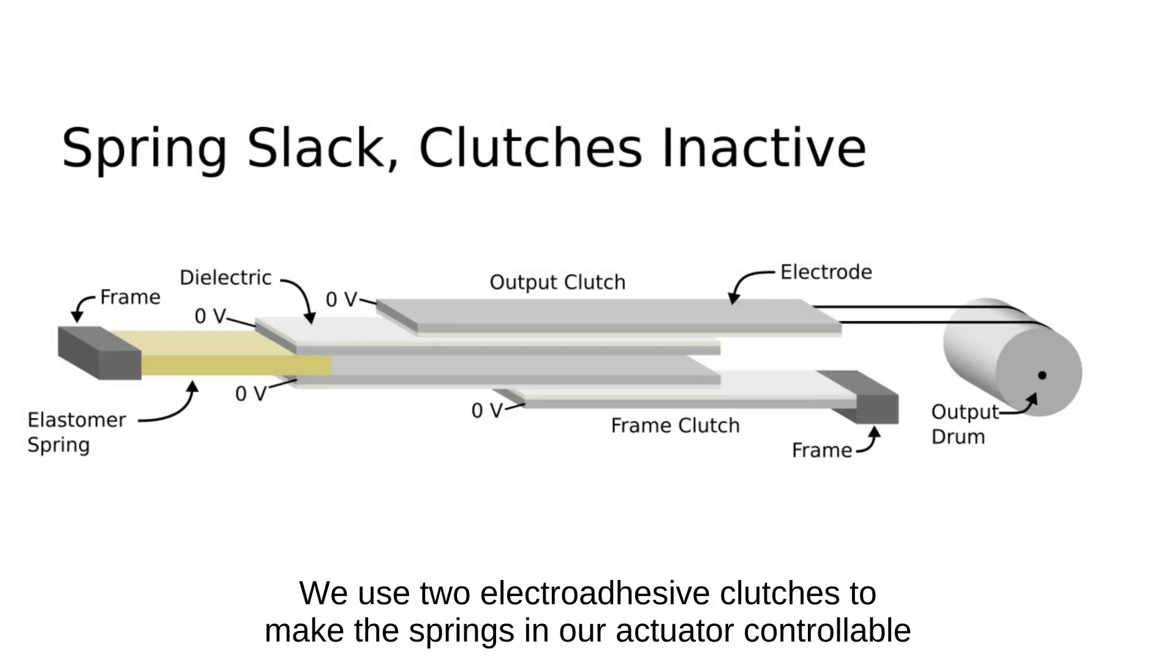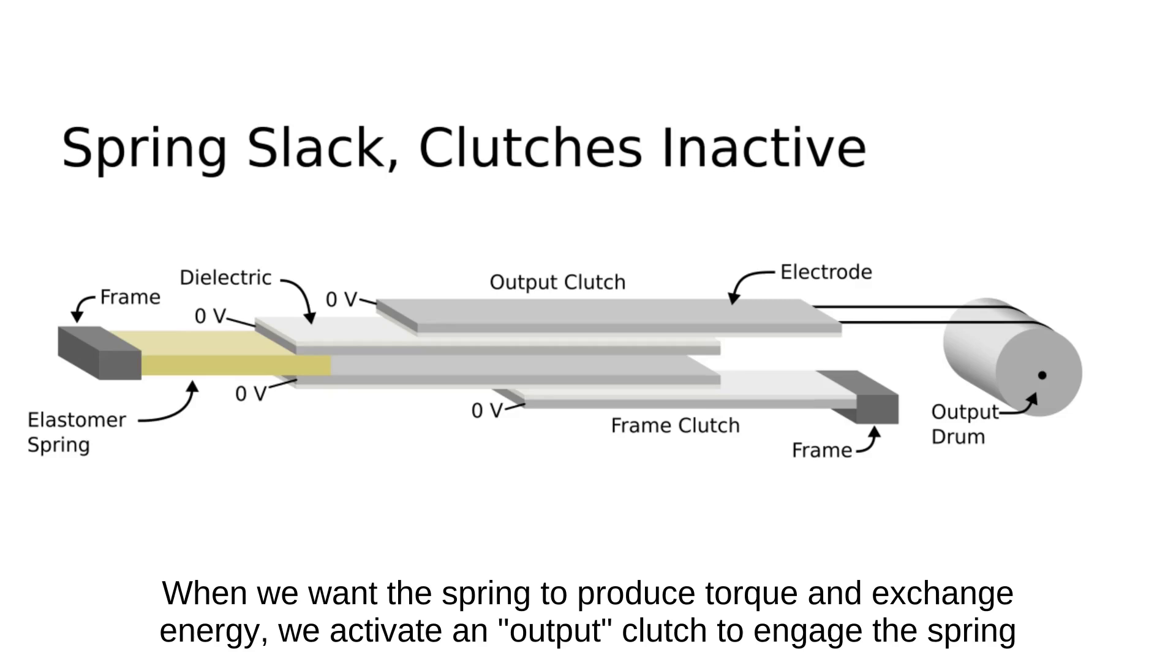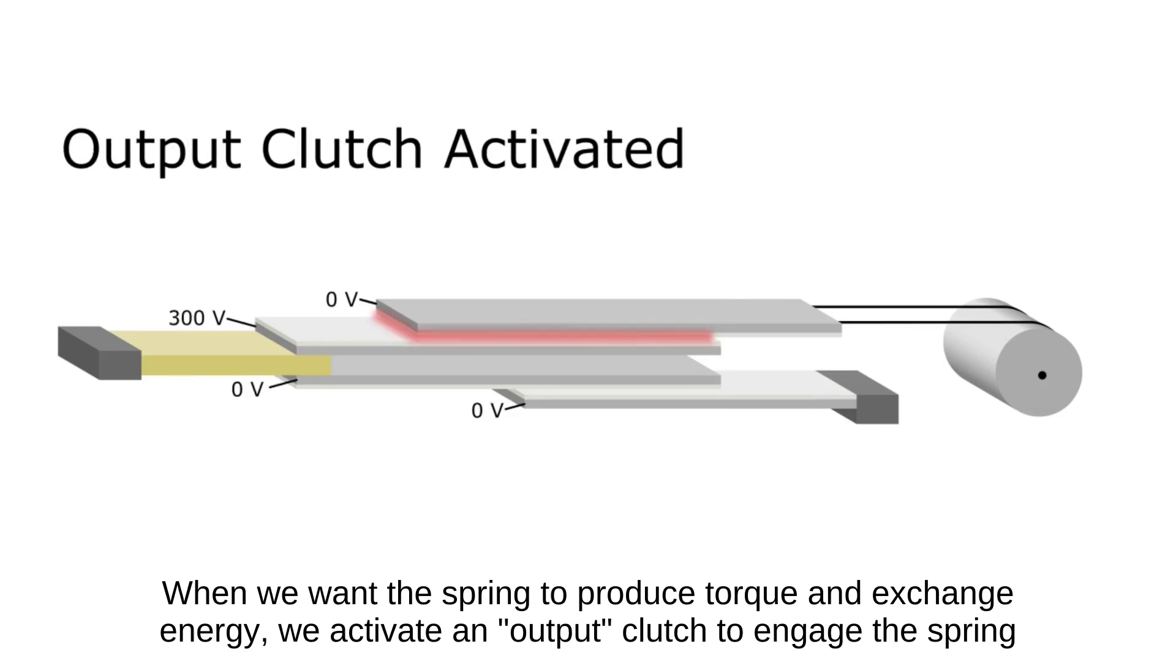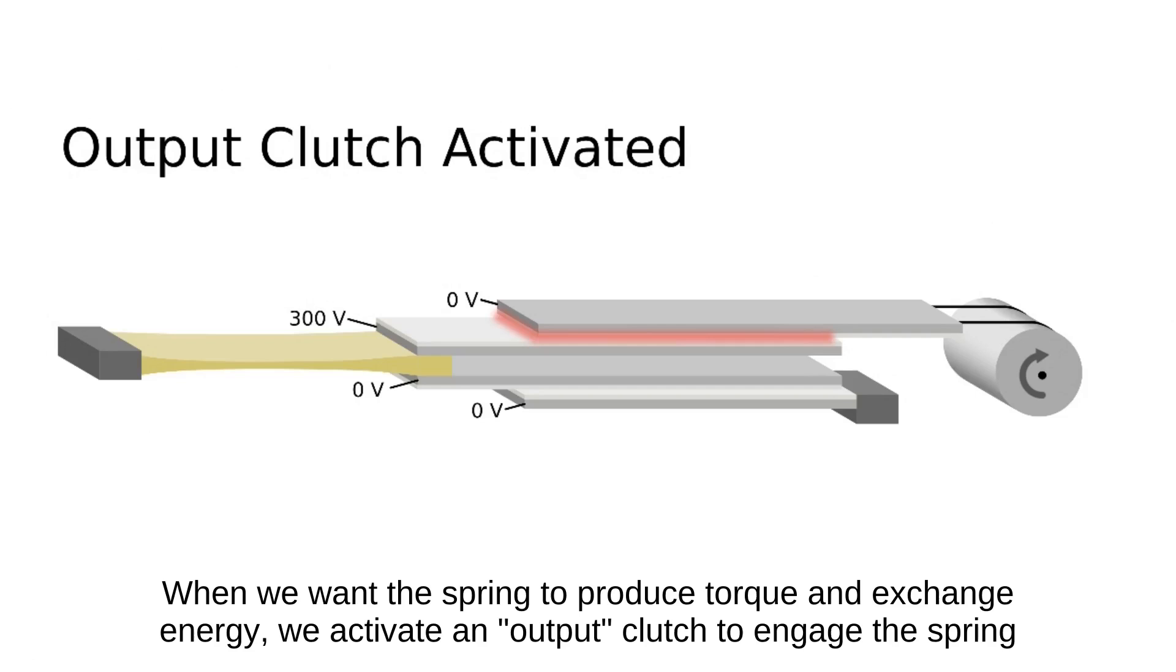We use two electro-adhesive clutches to make the springs in our actuator controllable. When we want the spring to produce torque and exchange energy, we activate an output clutch to engage the spring.